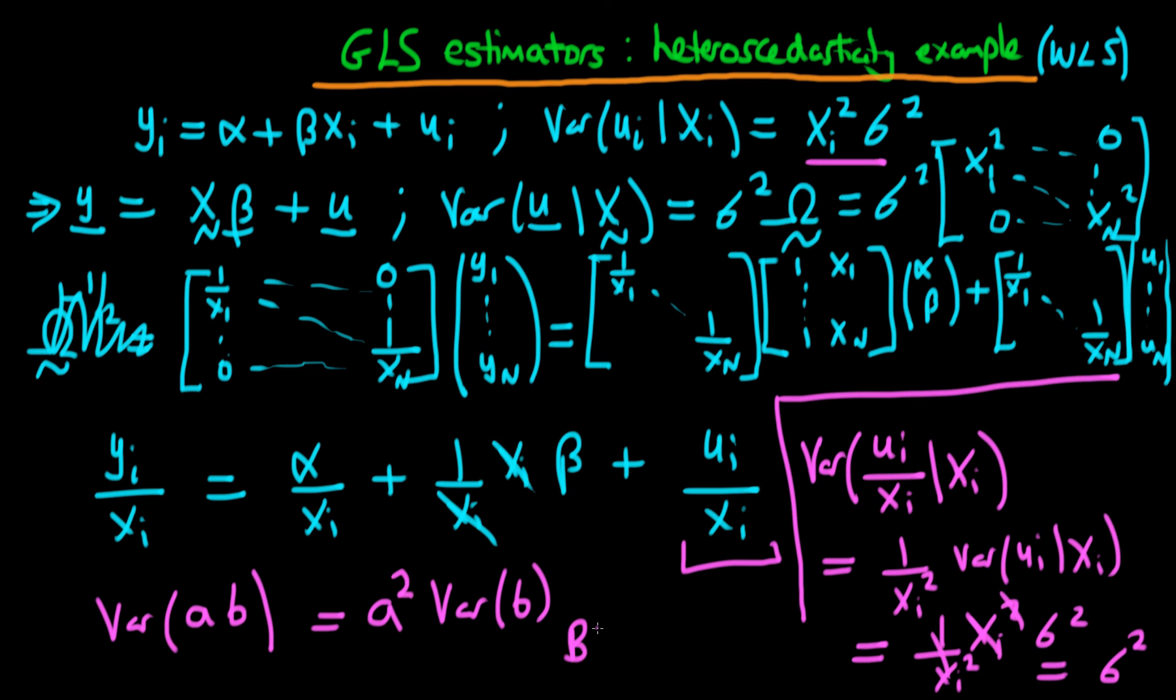Which means that OLS on the transformed system are going to be blue. In other words, GLS estimators, or weighted least squares estimators, are actually going to be blue.